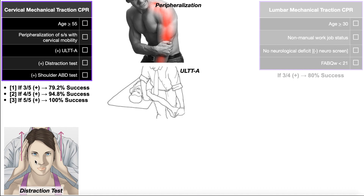The fourth criterion is the distraction test, which is an easing test. We want the patient to start with neck pain at baseline, or any of those radicular signs or symptoms going down the upper extremity. When we distract the head — pull it up — we're pulling those cervical segments apart, gapping the intervertebral foramina, and that should potentially relieve those symptoms. If the neck pain or arm pain or paresthesias are relieved with distraction, that's a positive distraction test.